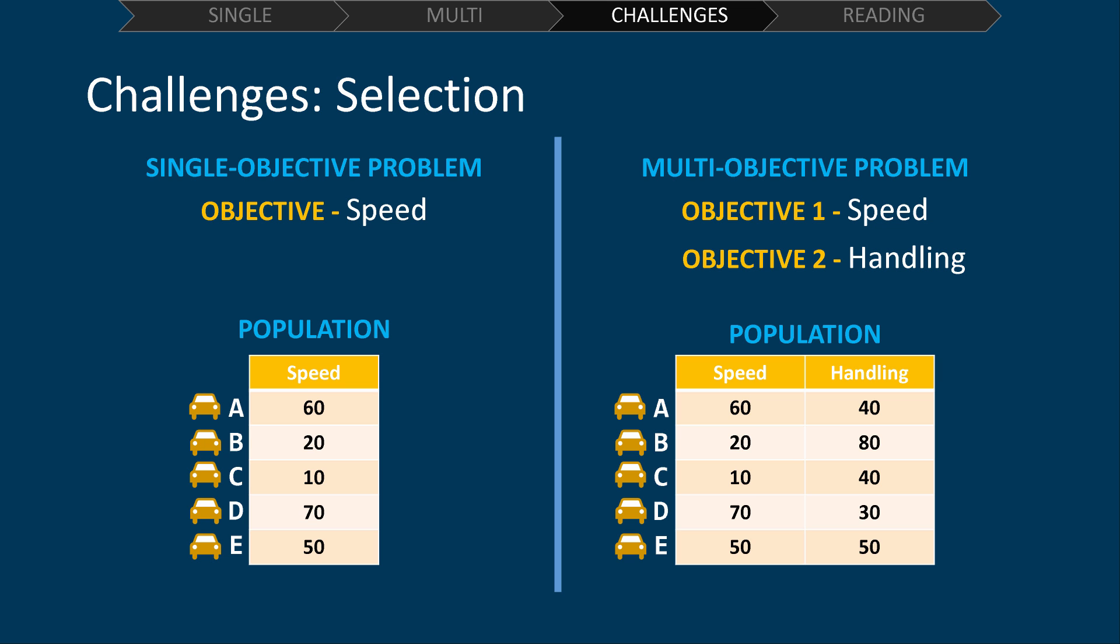Now look at the multi-objective problem. Which one is the best? If we pick the solution which has the best value for objective one, you can see it doesn't have the best value for objective two. Then if we pick the solution with the best value for objective two, we can see it doesn't have the best value for objective one. In this case, neither solution is better than the other.